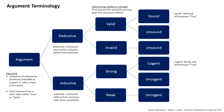The form of argument can be shown by the use of symbols. For each argument form, there is a corresponding statement form, called a corresponding conditional, and an argument form is valid if and only if its corresponding conditional is a logical truth. A statement form which is logically true is also said to be a valid statement form. A statement form is a logical truth if it is true under all interpretations. A statement form can be shown to be a logical truth by either showing that it is a tautology or by means of a proof procedure. The conclusion of a valid argument is not necessarily true — it depends on whether the premises are true.